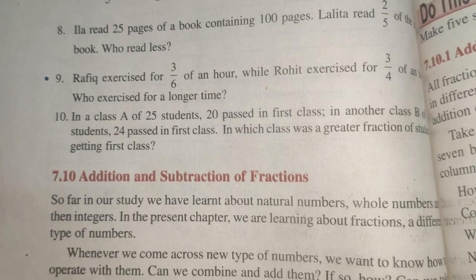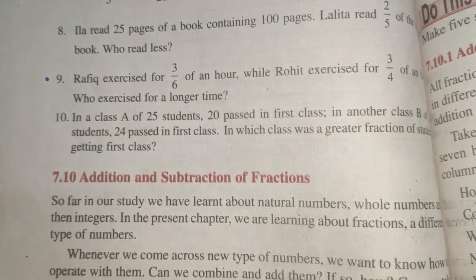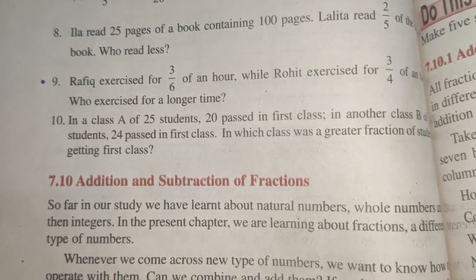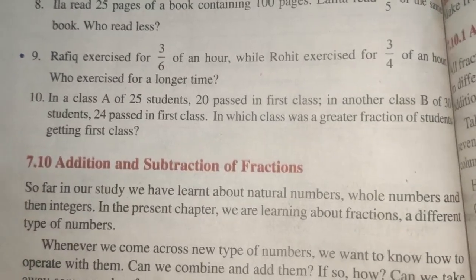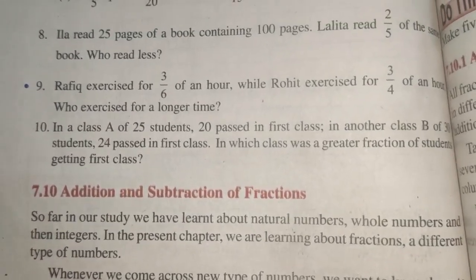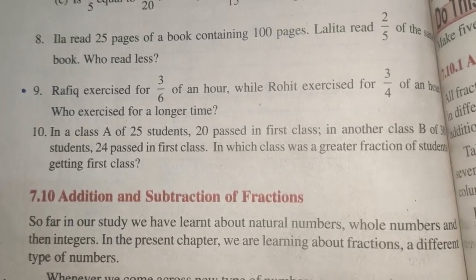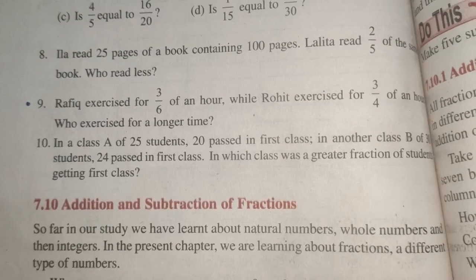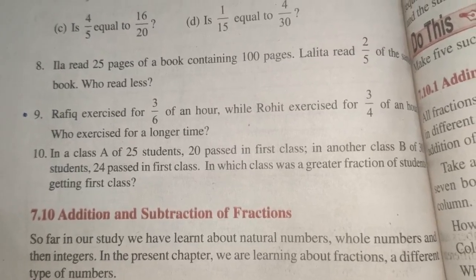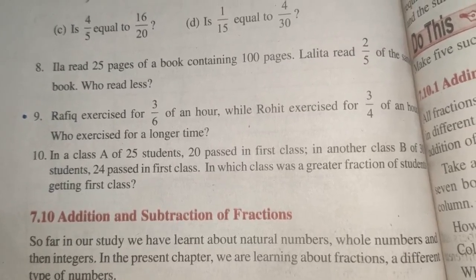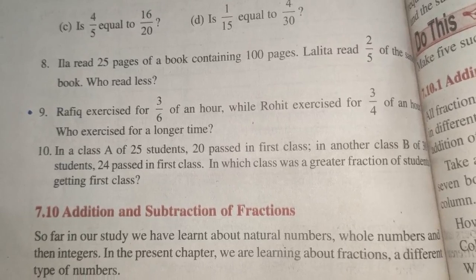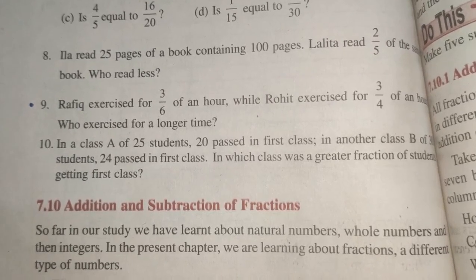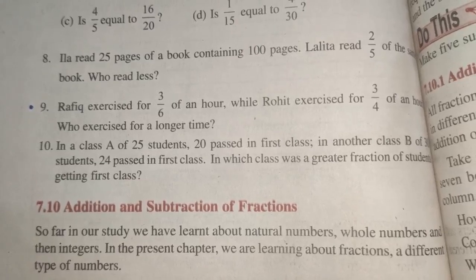Question Number 10: In Class A there are 25 students and 20 passed in first class. In another Class B there are 30 students and 24 passed in first class. We need to find in which class a greater fraction of students got first class. We will find the fraction for each class and then compare.